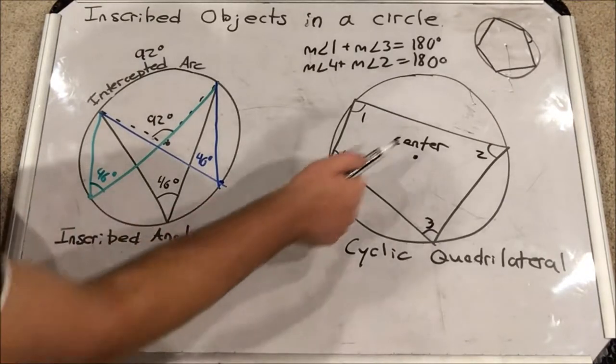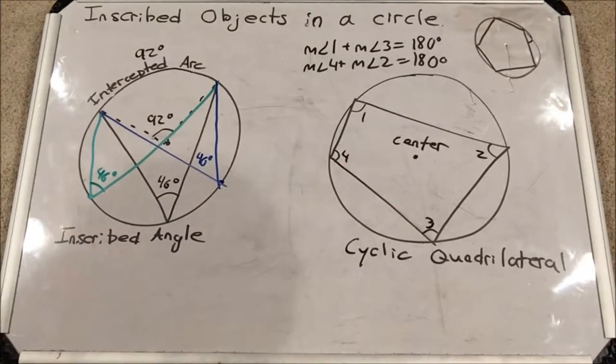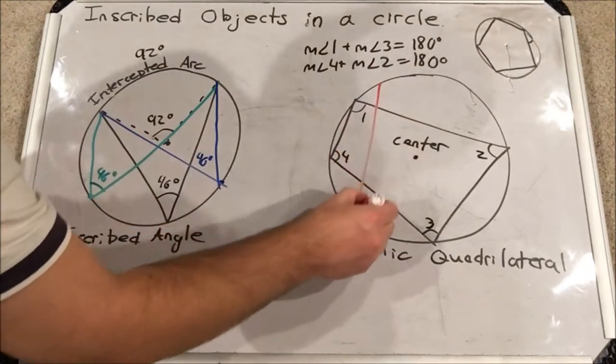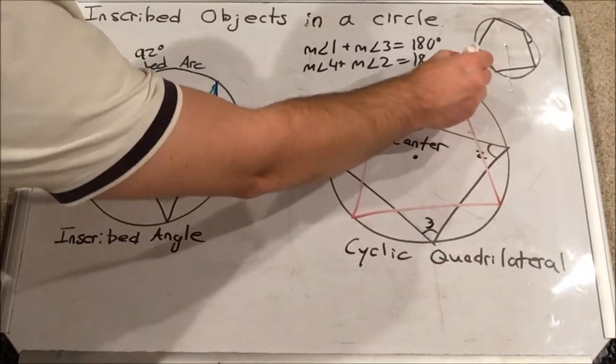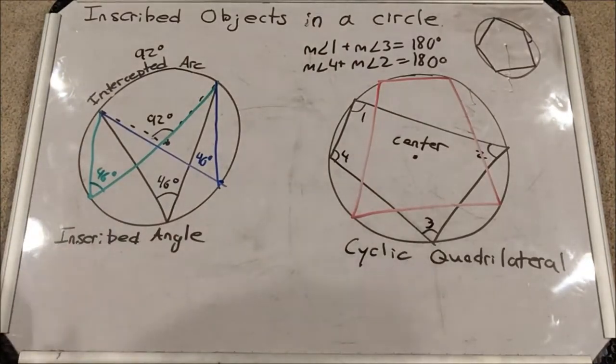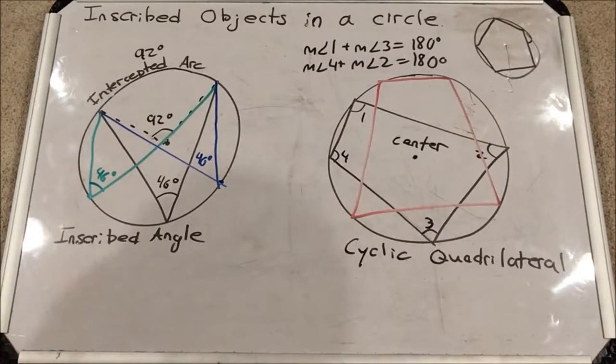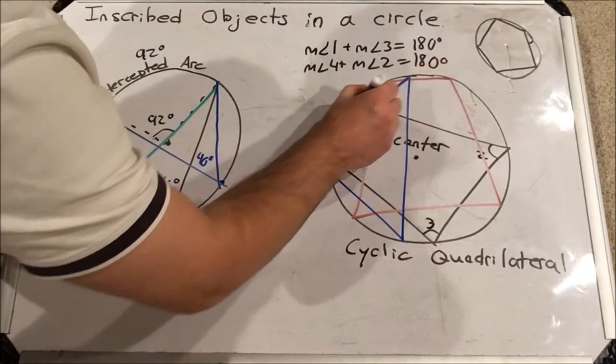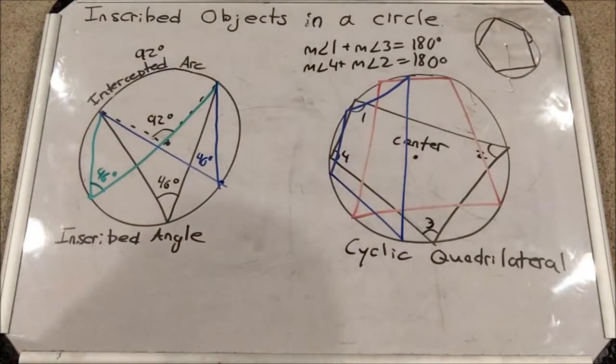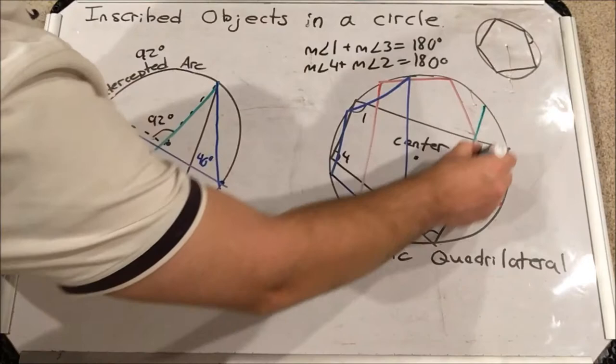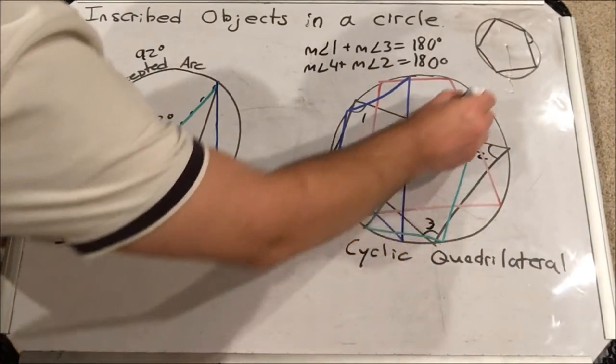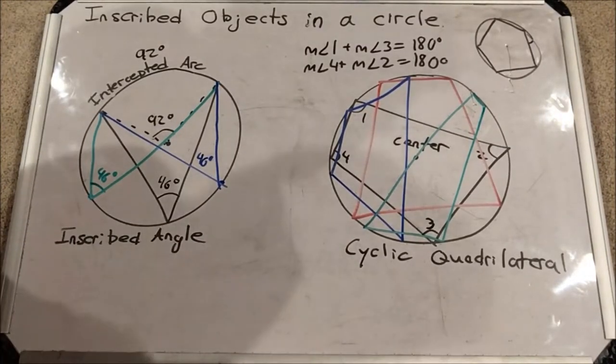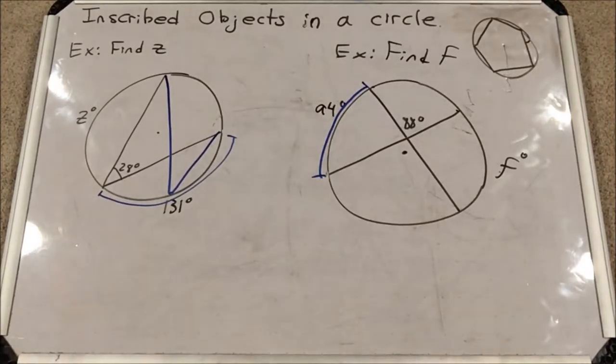I'm not gonna do the proof of this opposite angles being supplementary, but there is a proof out there. Again, notice how the center is not involved. This is true for any inscribed quadrilateral. I'll draw another one, totally different than the first. Opposite angles of this cyclic quadrilateral are also supplementary, as are this one and this one. Any inscribed quadrilateral has opposite angles supplementary.